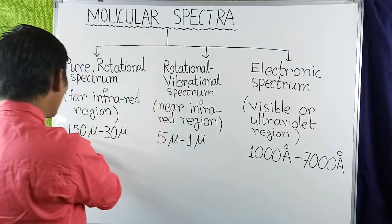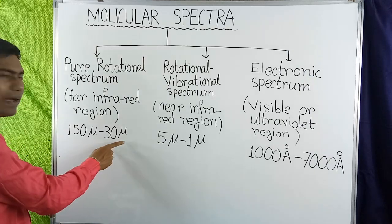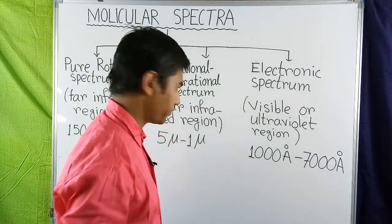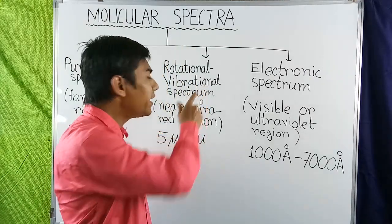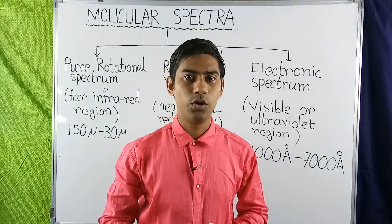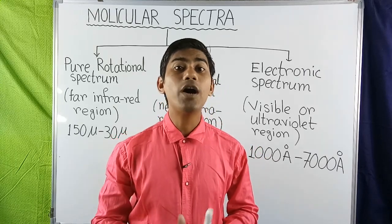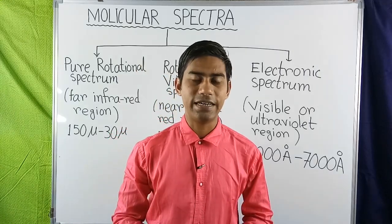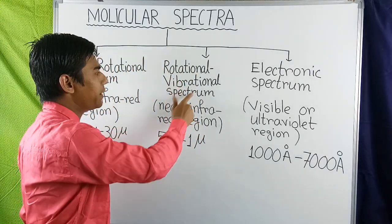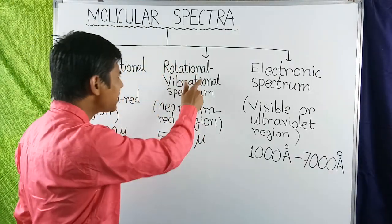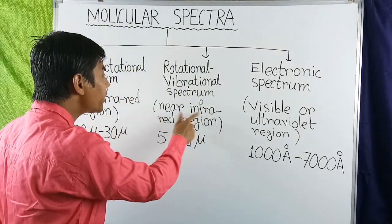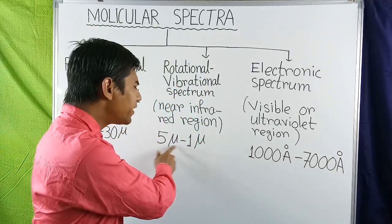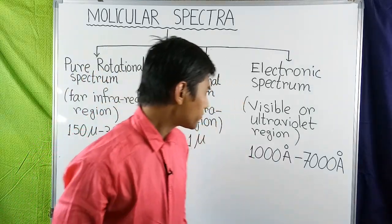The wavelength range for pure rotational spectrum is about 30 micrometers to 150 micrometers. The rotational-vibrational spectrum arises from transitions between vibrational energy states of a molecule with the emission or absorption of a photon, when the electronic configuration of the atom remains constant. This spectrum lies in the near infrared region, with a wavelength range of about 1 micrometer to 5 micrometers.